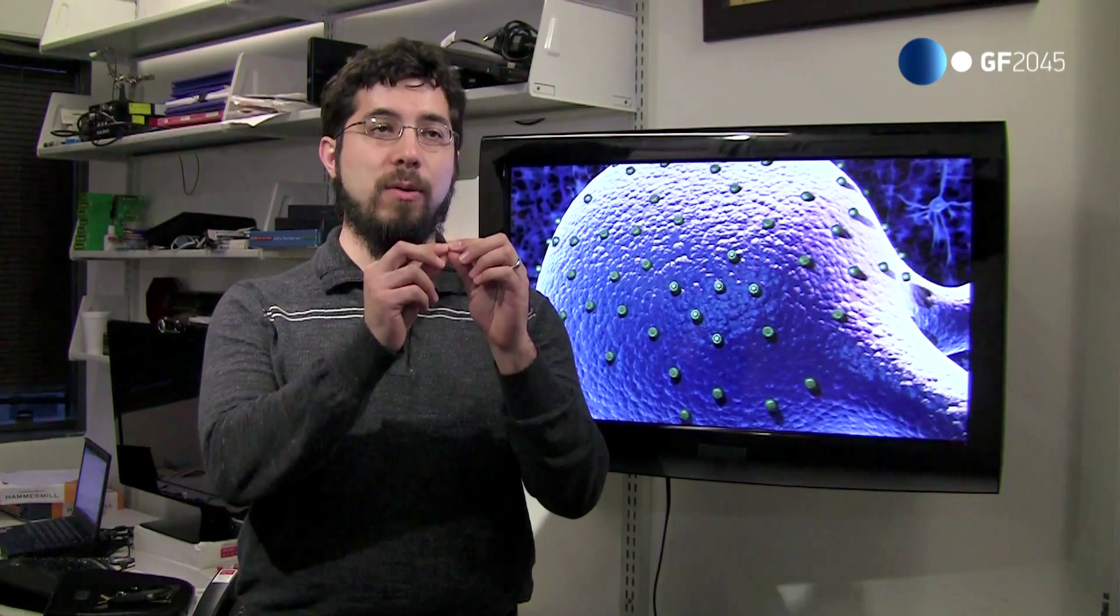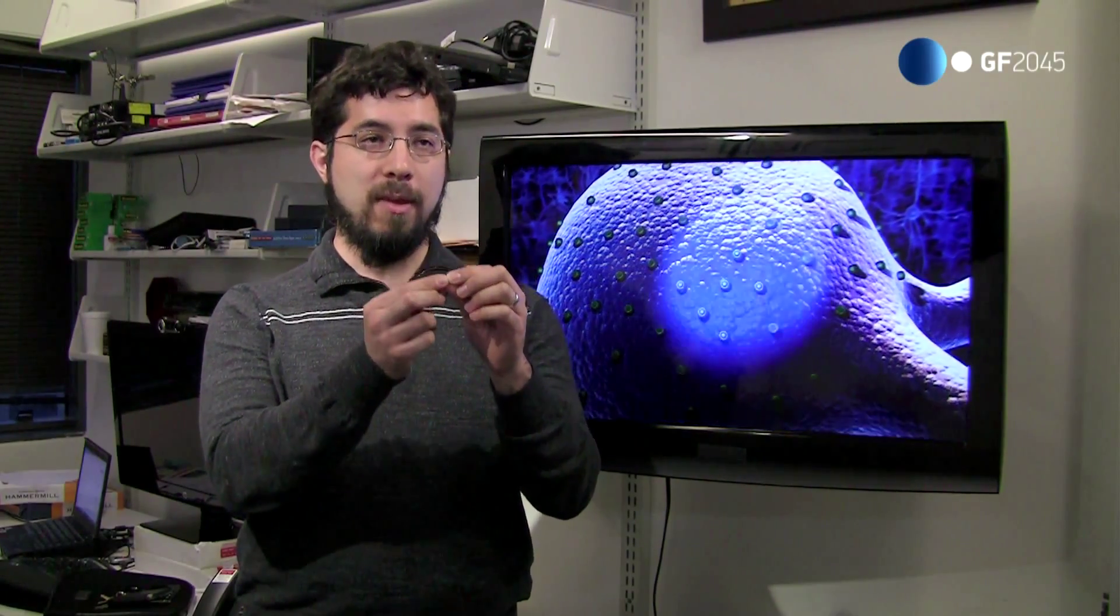The brain is an incredibly densely packed and complicated high-speed machine. So in a cubic millimeter of tissue, you're going to have perhaps 100,000 cells connected by 900 million connections between them.